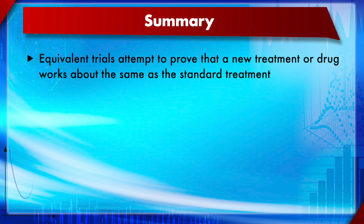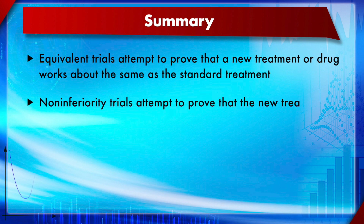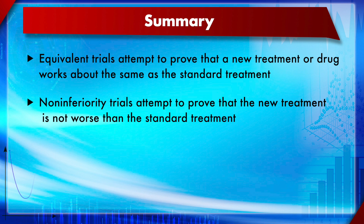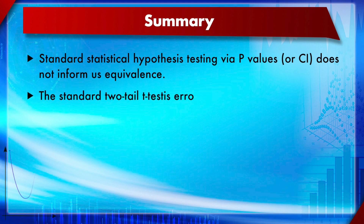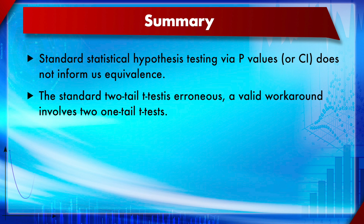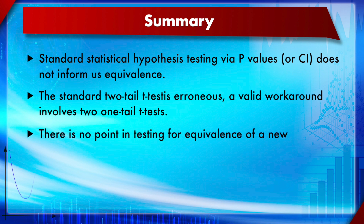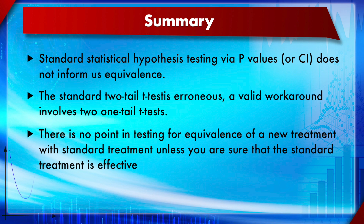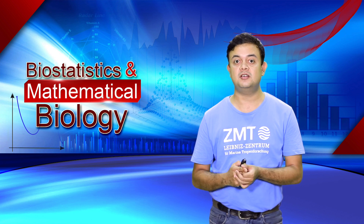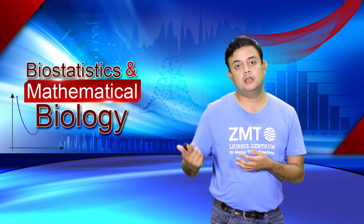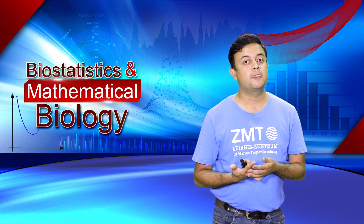In summary: equivalence trials attempt to prove the new treatment works about the same as the standard treatment, while non-inferiority trials attempt to prove the new treatment is not worse. Standard statistical hypothesis testing via p-values or confidence intervals does not inform us about equivalency. While the standard two-tailed t-test is erroneous, a valid workaround involves two one-tailed t-tests.